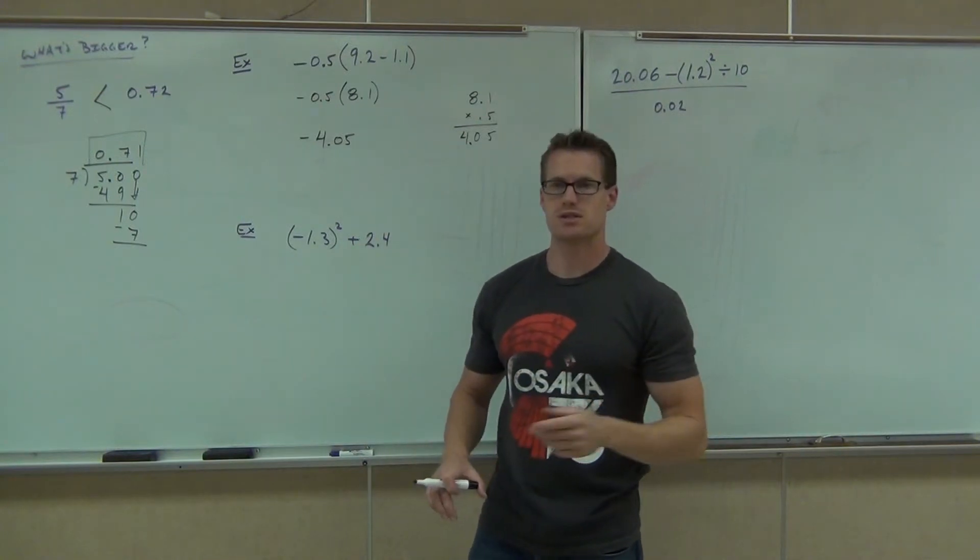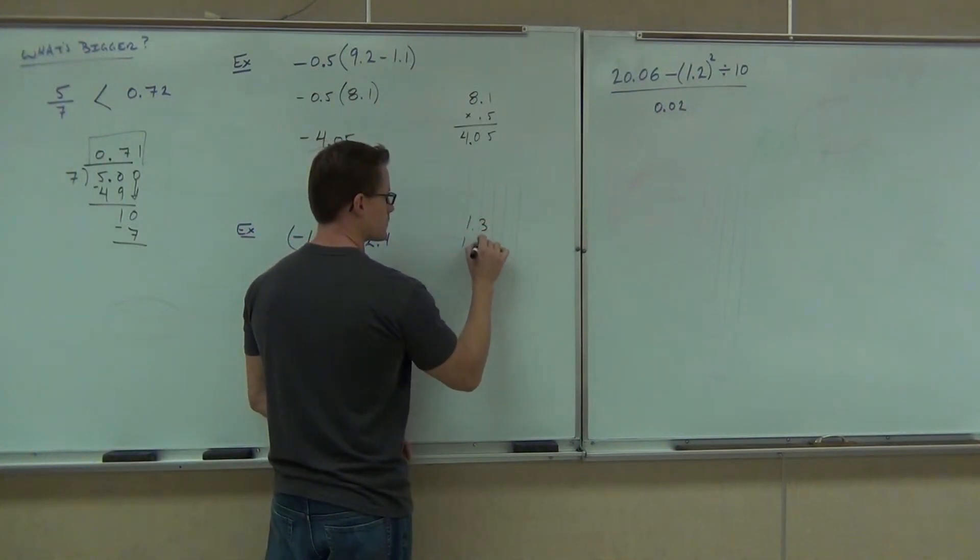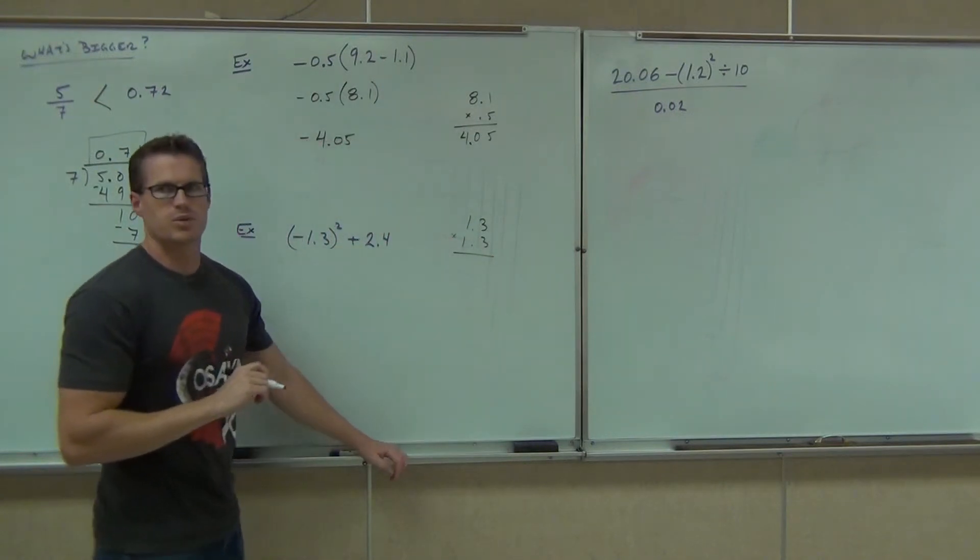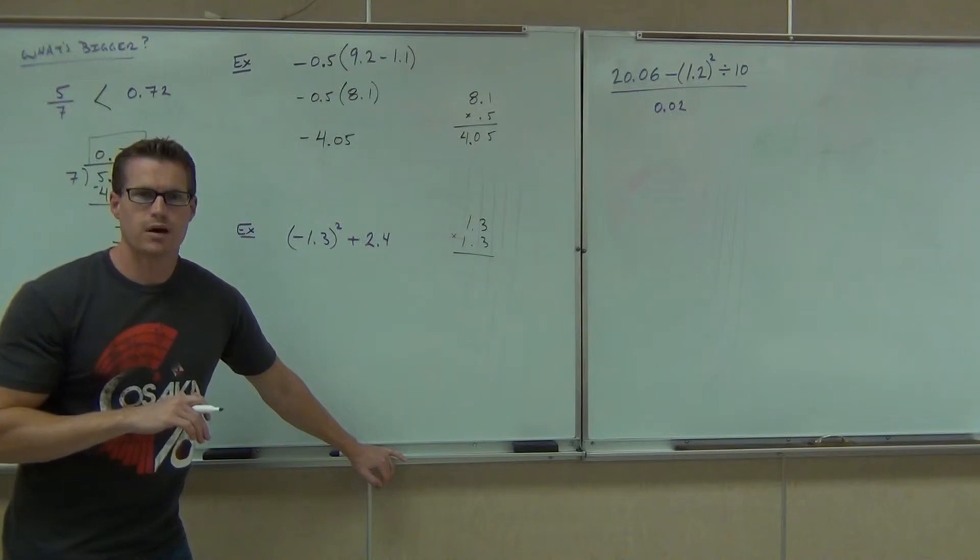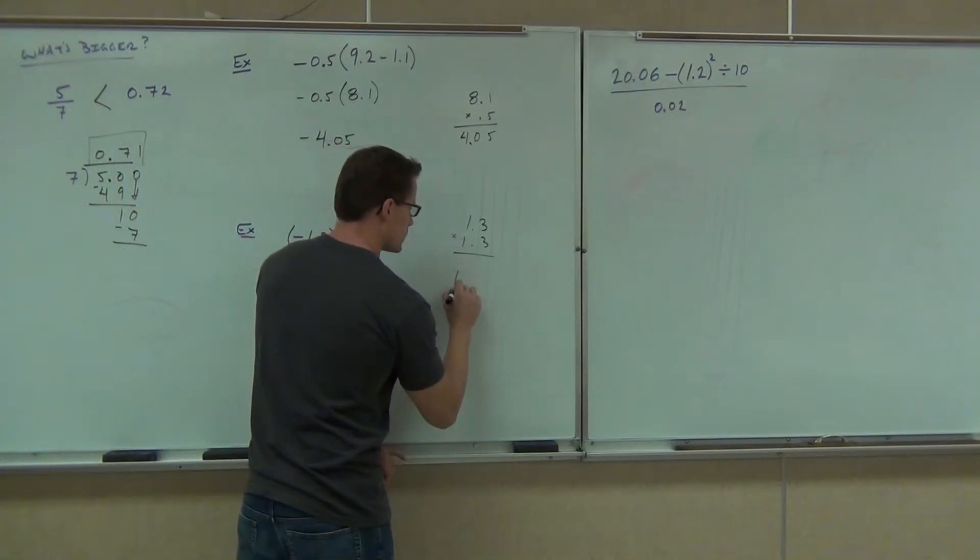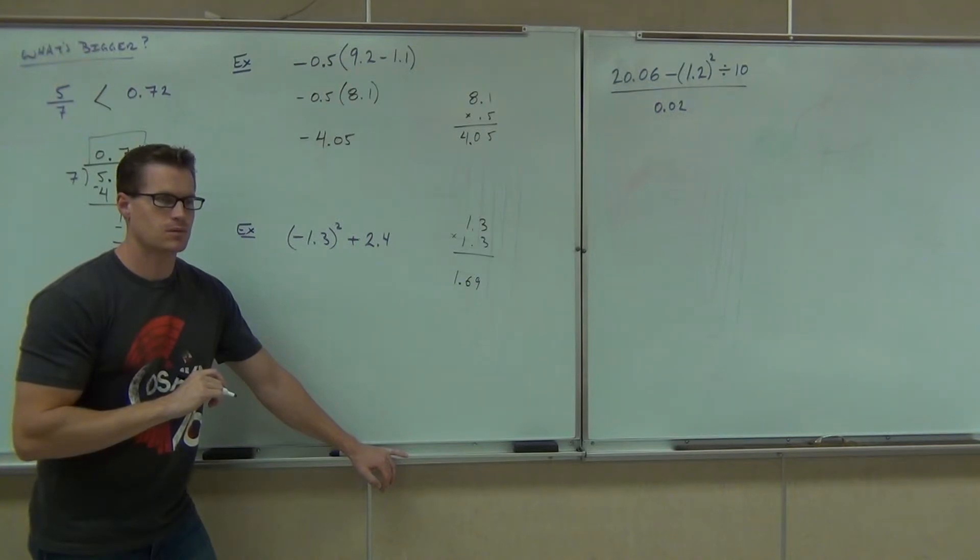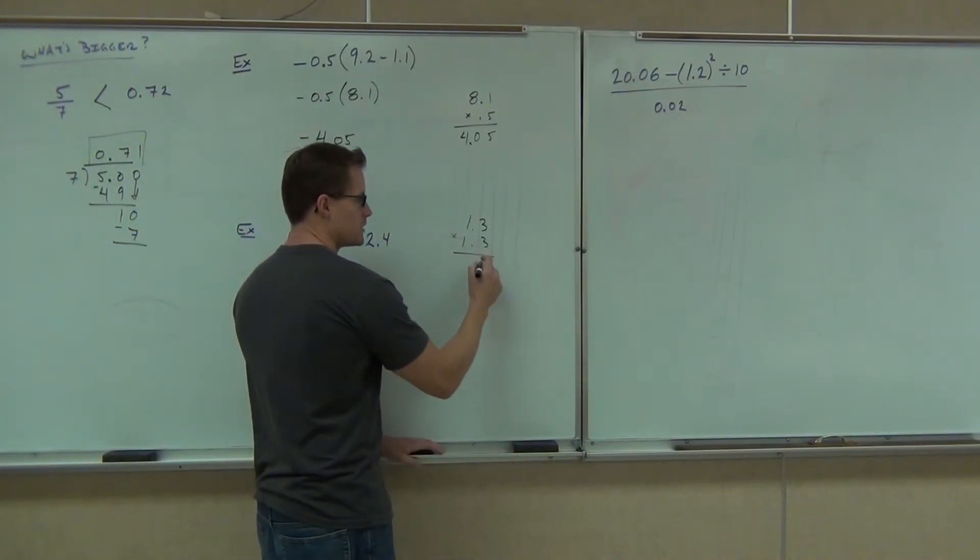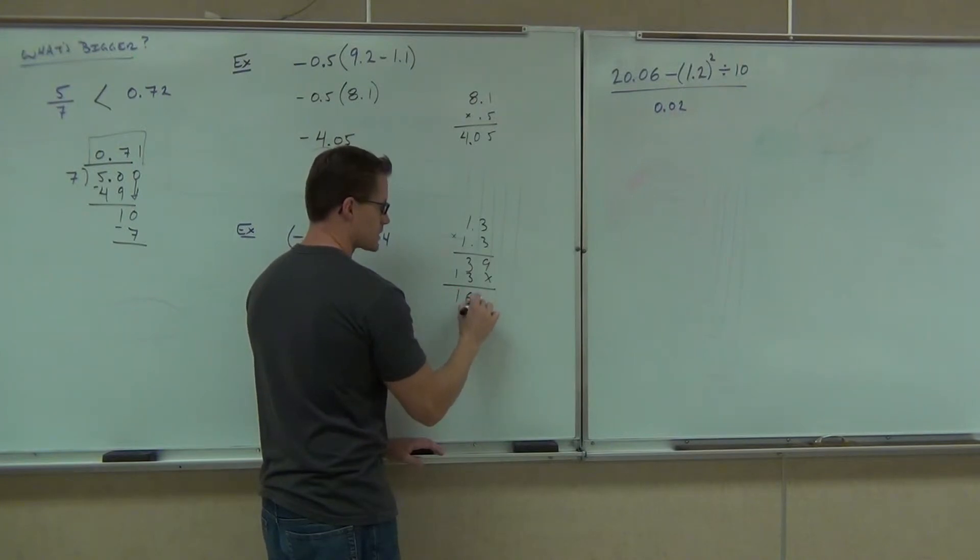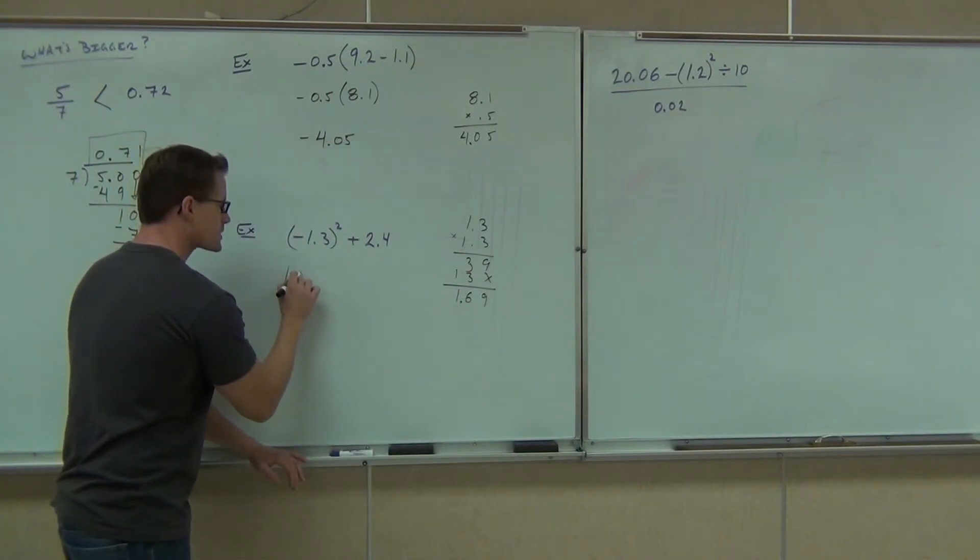So do 1.3 times a self off to the side if you'd like. So 1.3 times 1.3. You'll need a place value holder. You'll add 1.69. You should be getting 1.69. Did you get 1.69? No? Yes, no? Yes. How am I getting 1.69? What's 3 times 3? 9. What's 3 times 1? 1.3 times 1. Place value holder. 1 times 3? 1. How many decimal places do we move? 2. From the right-hand side, it says 1.69.